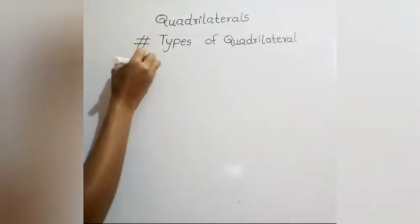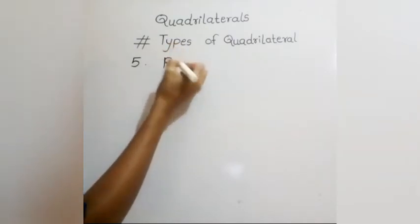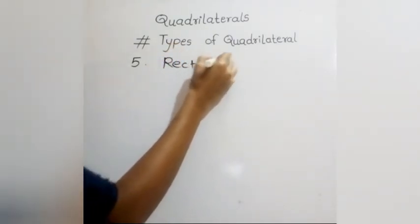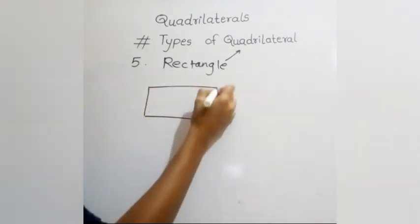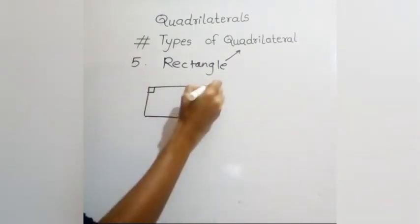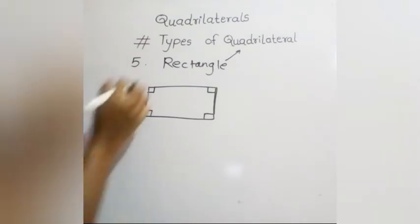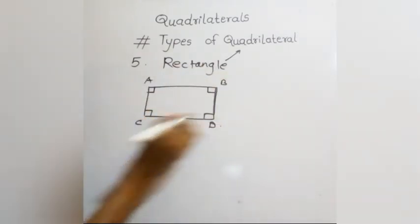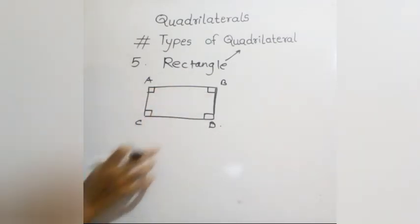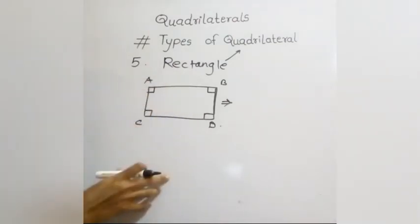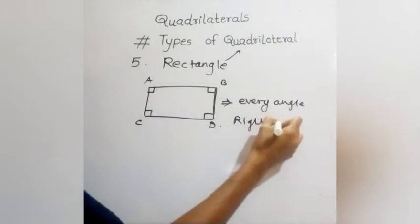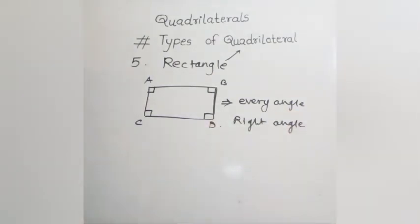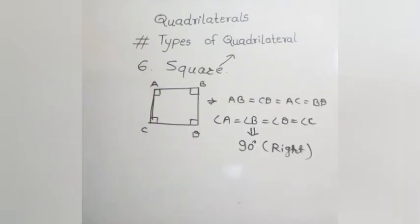The fifth type of quadrilateral is a rectangle. A rectangle has every angle equal to 90 degrees — a right angle. In quadrilateral ABCD, if every angle is a right angle, it is a rectangle. The sixth type is a square: if all angles and all sides are equal, then the quadrilateral is a square.